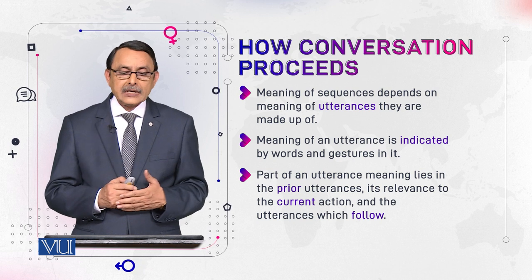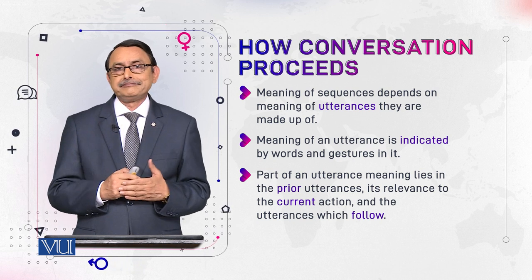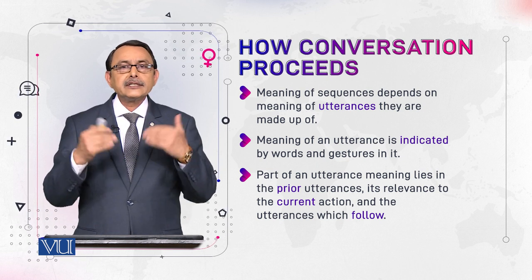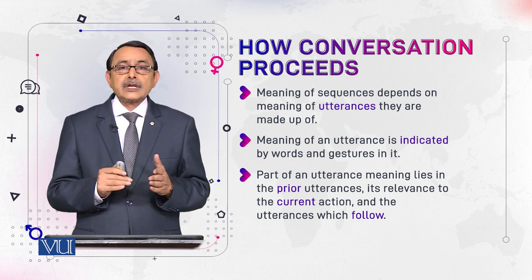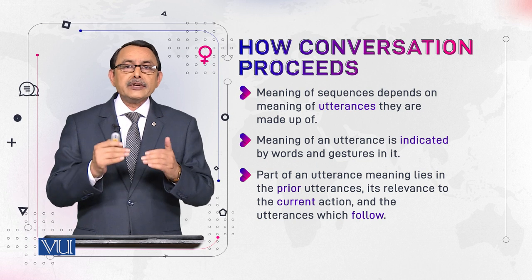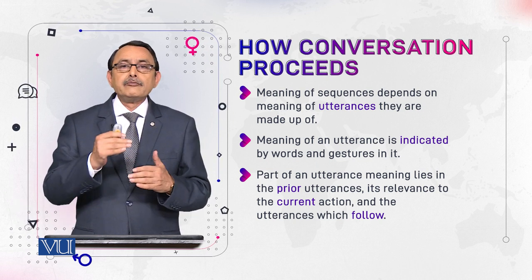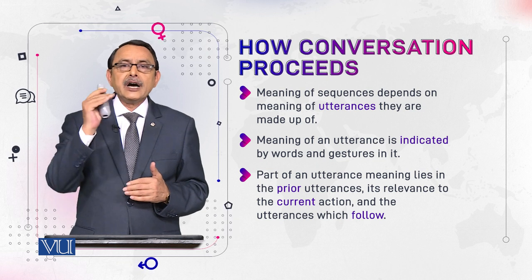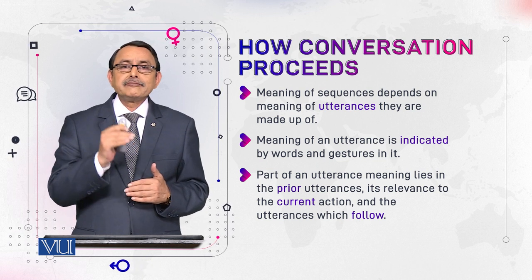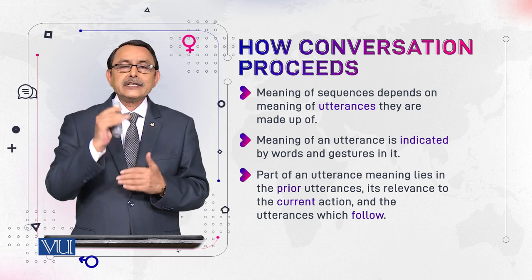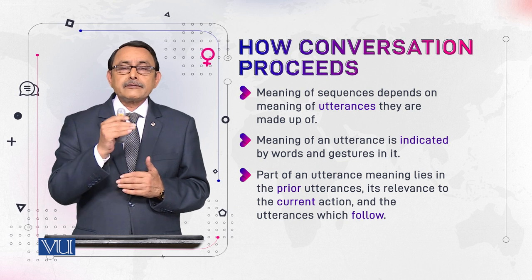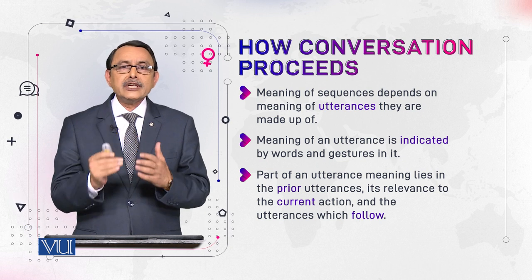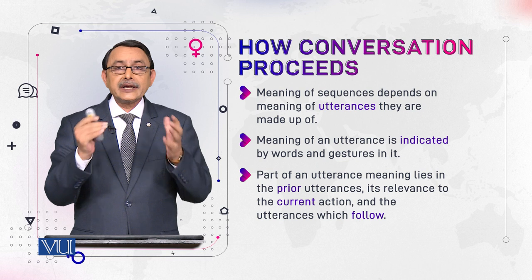Part of an utterance's meaning lies in prior utterances. We talked about meaning that comes from inside utterances. Now we are talking about that part of meaning which lies in prior utterances. When we talk, we move forward in talk, leaving behind utterances. These foregoing utterances — the ones that precede our current utterance — contribute to its meaning. They become its background, its context.